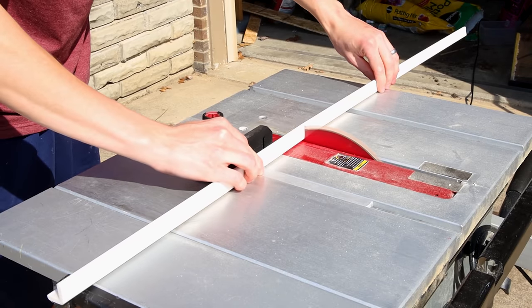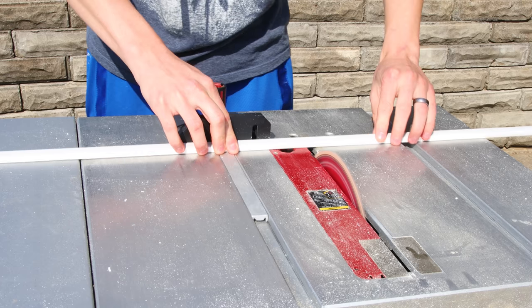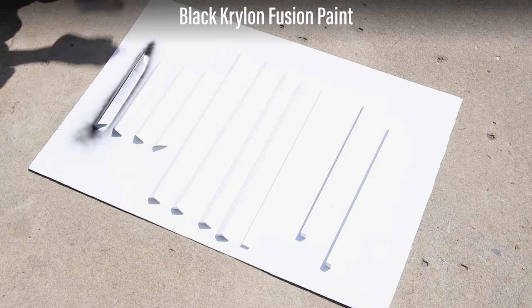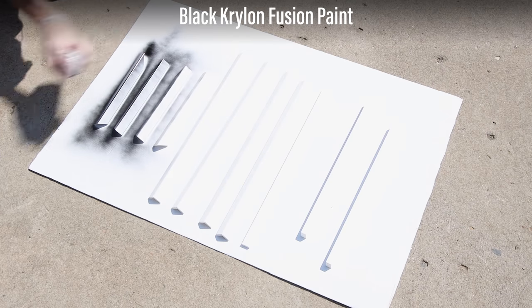From here, I went on to cut the plastic trim pieces I showed earlier. I find it easiest to use the table saw. To match the rest of the tank, I painted them black with Krylon fusion paint.